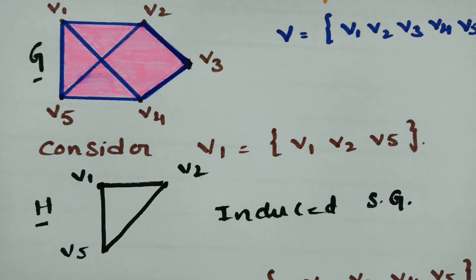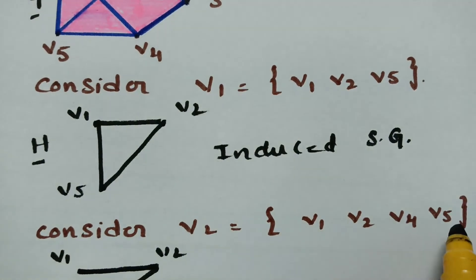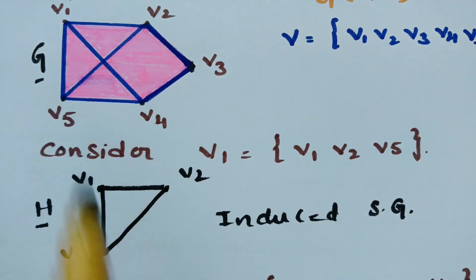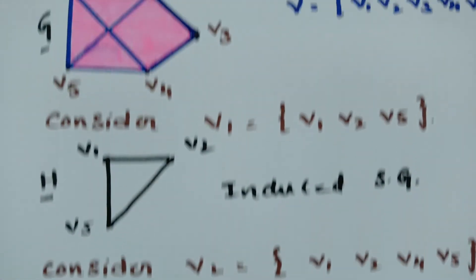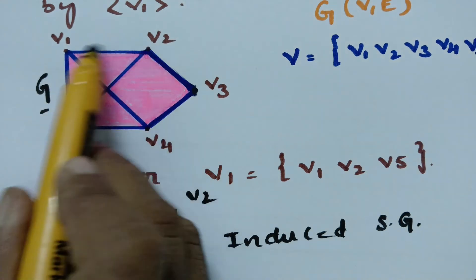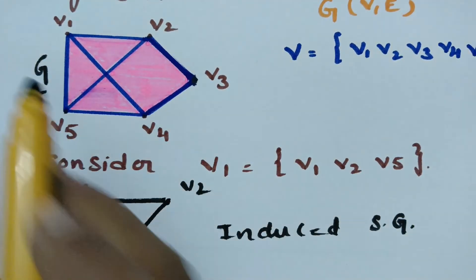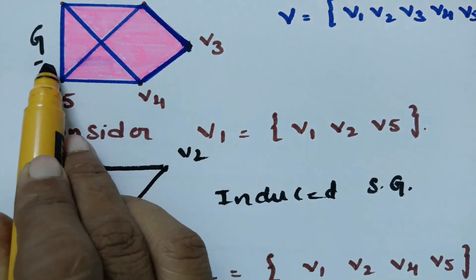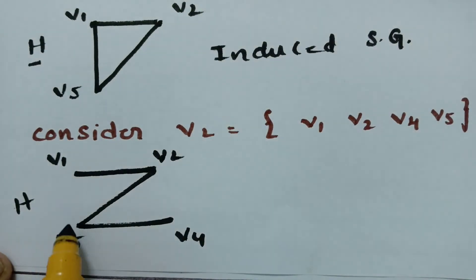Now consider another subset from the main graph: {v1, v2, v4, v5}. Here v1, v2, v4, and v5 are taken. We observe that v1-v2 has an edge, v2-v5 has an edge in both the subgraph H and main graph G, and v4-v5 has an edge in both H and G.